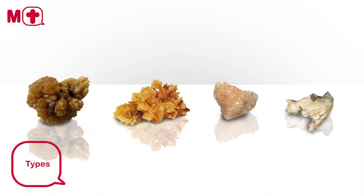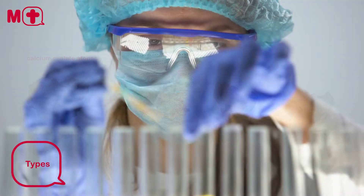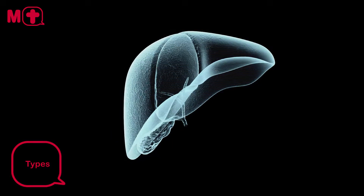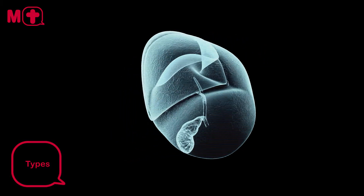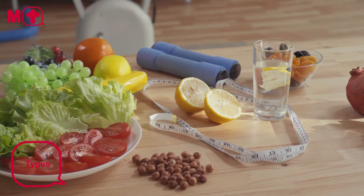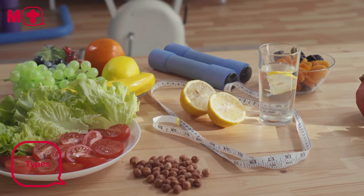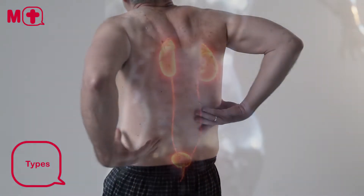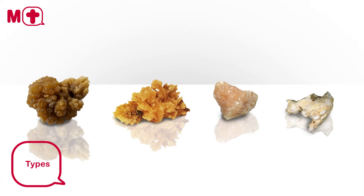There are four major types of kidney stones. The most common are calcium oxalate stones. These stones are created when calcium combines with oxalate in the urine. Oxalate is a substance that's made by your liver and absorbed through certain foods, such as fruits, vegetables, and nuts. Not drinking enough fluids and having too much oxalate in your body, as well as other metabolic conditions, can cause these stones to form.